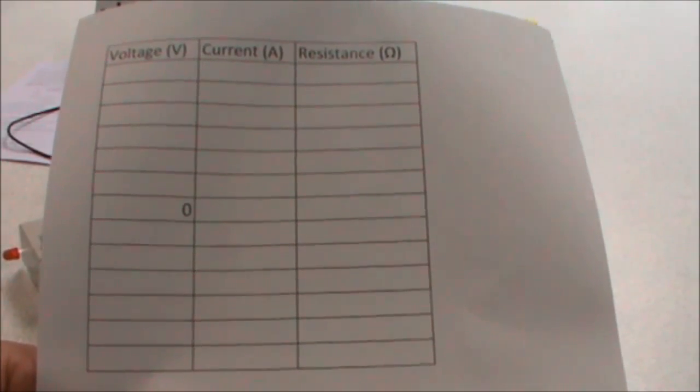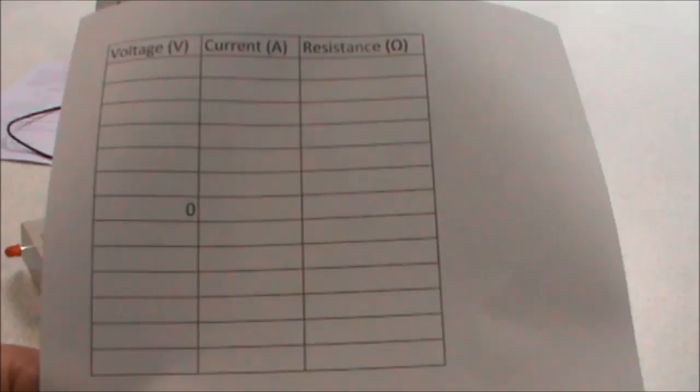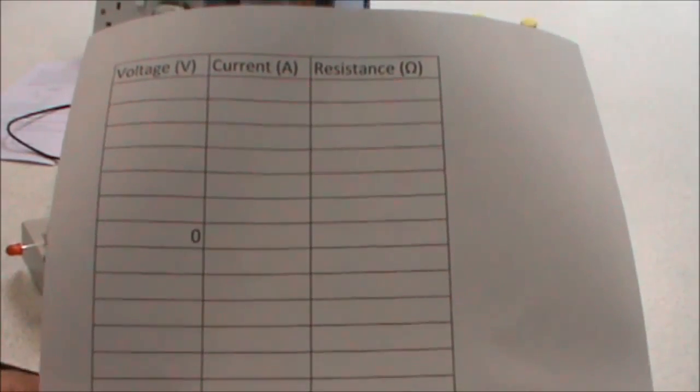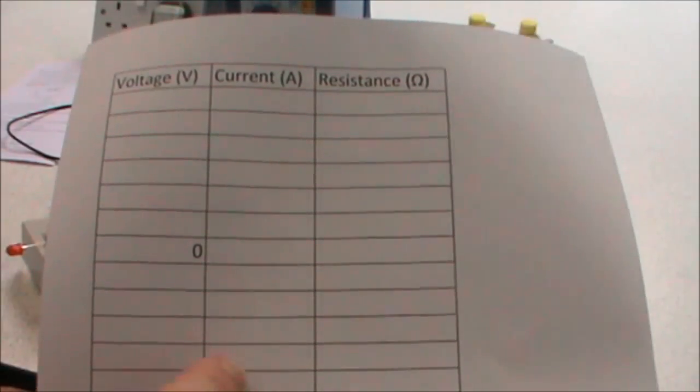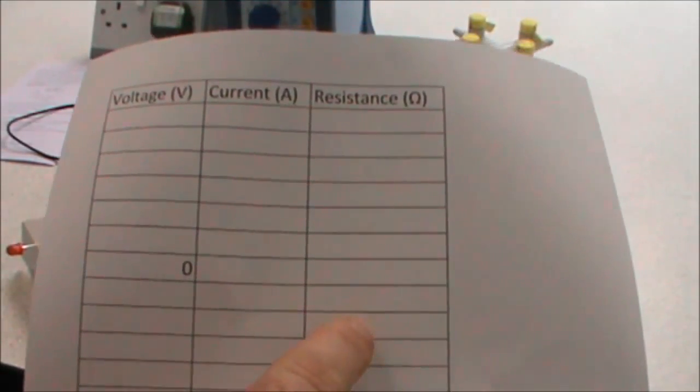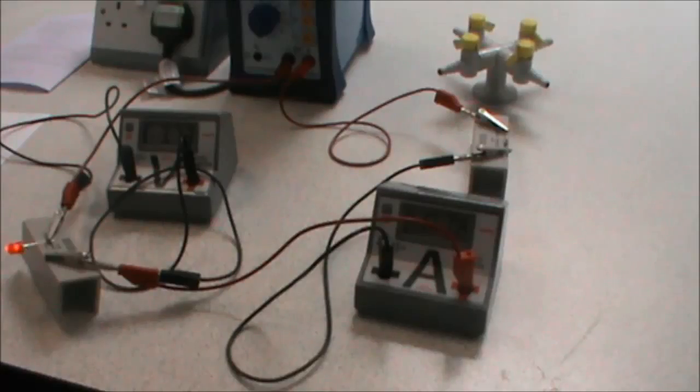As with our ohmic and non-ohmic conductor required practicals, we have a results table here for measuring the voltage, our independent variable, and the current, the dependent variable. We can also calculate the resistance after the experiment. So, we're going to start recording our results.